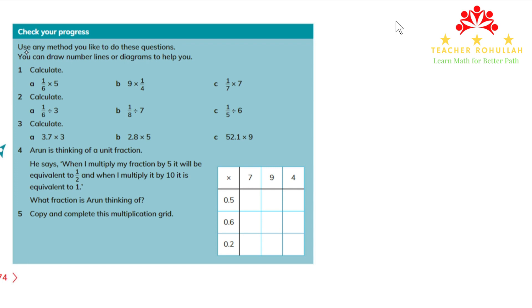In the first part it says use any method you like to do these questions. You can draw number lines or diagrams to help you. So it's up to the students — whatever they use, they can solve these problems. In order to make it understandable, for question one I will use different methods: for the first one I will use a diagram, for the second one a number line, and for the third one direct multiplying.